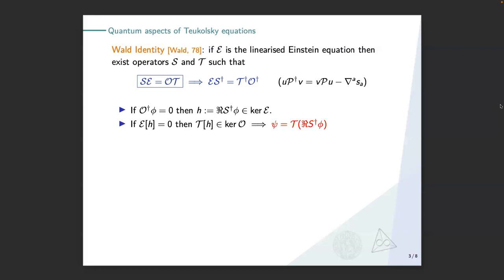This is the magic, because the Teukolsky equation is separable, so you can really write a mode decomposition for it. On the other hand, if you already have a solution of the linearized Einstein equation, then the other side is zero, so Pφ must be in the kernel of O — it must be something we called C, the perturbed Riemann component. So if you plug these two things together, you see that C and φ are not really independent, but are related by an identity that I will discuss in a couple of slides.